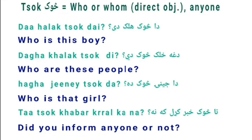Another example: 'Daga Halak Tuk Di' — 'Who are these people?' 'Daga' means these, 'Halak' with a kh sound means people, 'Tuk' means who, and 'Di' is are. We use 'Di' instead of 'Dai' because Halak are plural. For plural, regardless of gender, we always use 'Di'. For male singular we use 'Dai', and for female singular we use 'Dha'.